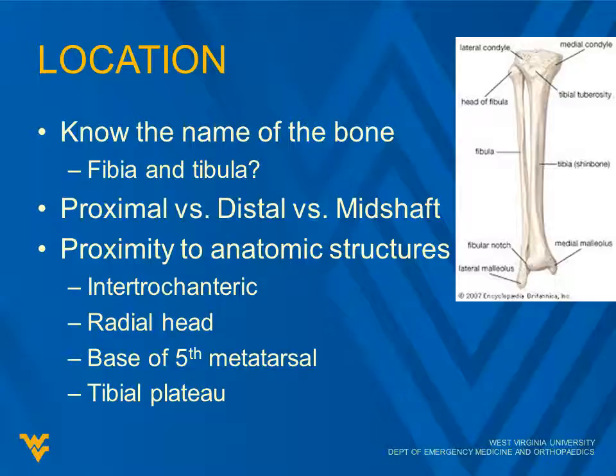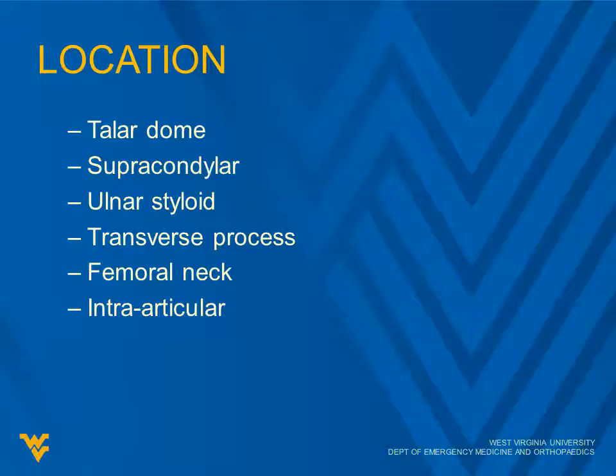You want to know proximal, distal, mid-shaft. Those are some easy names to remember that make you sound at least a little more intelligent, like you actually looked through the x-ray. Proximity to anatomic structures is important. There are lots of descriptors, typically specific to each bone — things like intertrochanteric, radial head, base of the fifth, tibial plateau, talar dome, supracondylar, styloid, transverse process, femoral neck, intraarticular. Obviously, it's just a partial list.